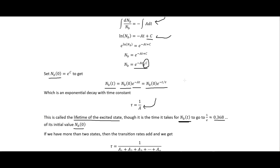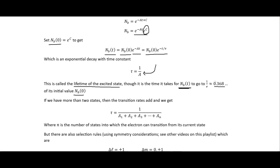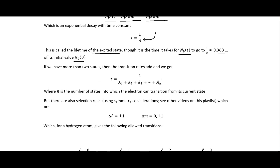This time constant 1/A is called the lifetime of the excited state — the time for the initial value to decay to 0.368 (i.e., 1/e) of its initial value. If we have more than two states, the transition rates add, and the time constant is one over the sum of all the different transition rates for each state into which the atom could move.